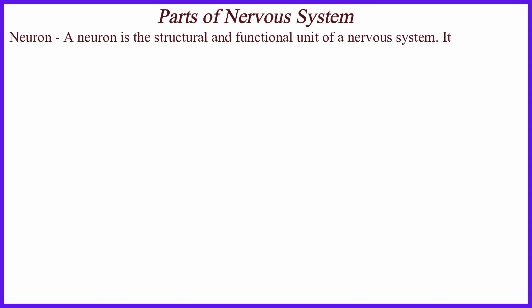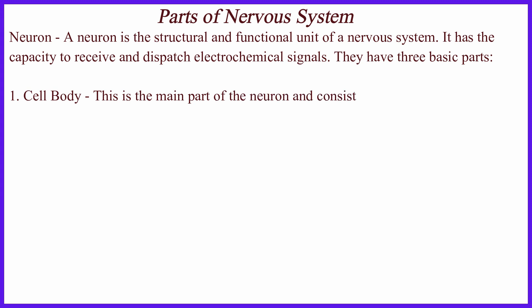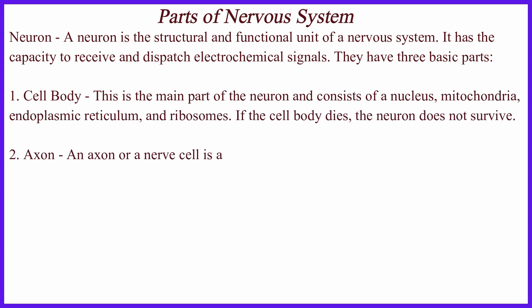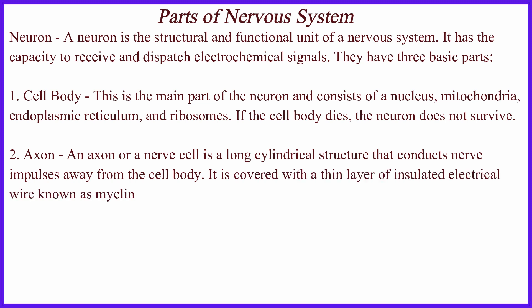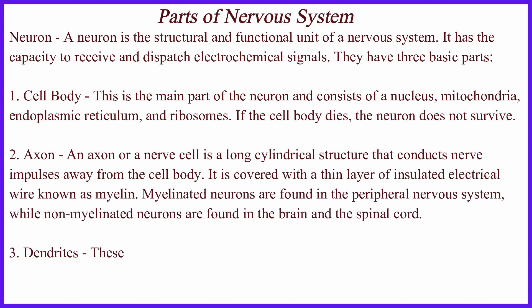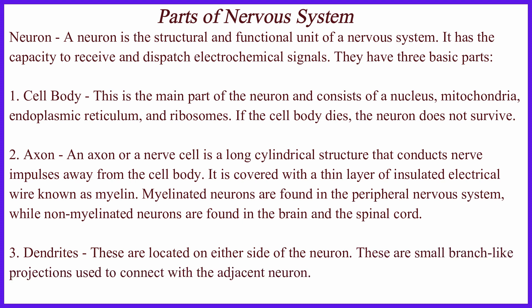A neuron is the structural and functional unit of a nervous system. It has the capacity to receive and dispatch electrochemical signals. Neurons have three basic parts. The cell body is the main part of the neuron and consists of a nucleus, mitochondria, endoplasmic reticulum, and ribosomes. If the cell body dies, the neuron does not survive.